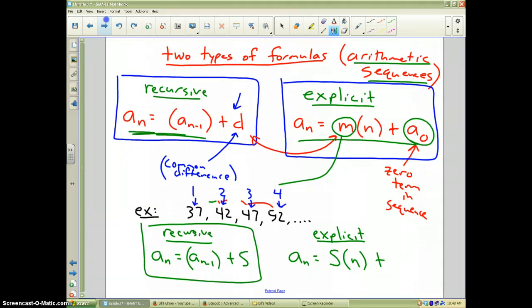Where's the 0 term? Well, that's at the beginning, one spot earlier. Follow the pattern. What number would go there? Well, that number obviously is 32. That number is my 0 term, which goes at the end of the explicit formula.